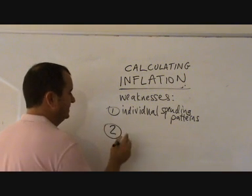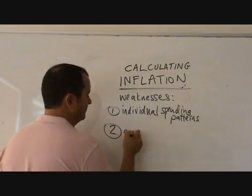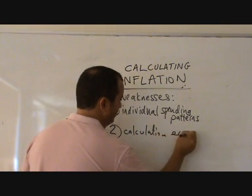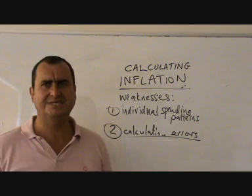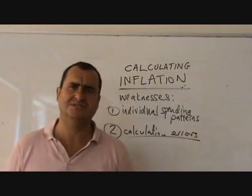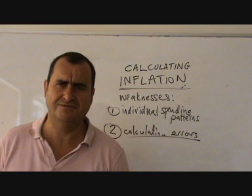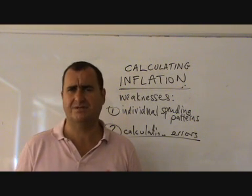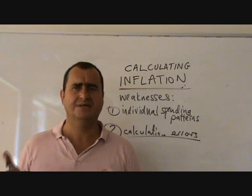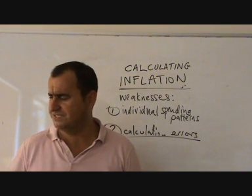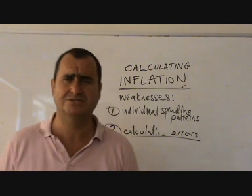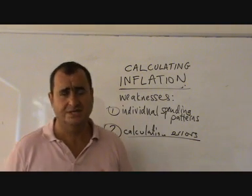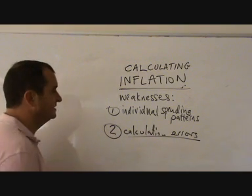A second weakness is sheer calculation errors. How easy can it be to collect 150,000 prices for 650 different goods all on the same day? It can't happen. There's lack of data, misrepresentations and miscalculations in the data, and this all feeds into the overall inaccuracy of the calculation of the inflation rate.